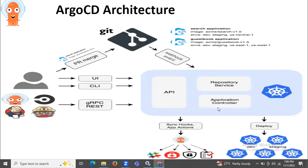The Application Controller is a Kubernetes controller which continuously monitors running applications and compares the current live state against the desired target state. It communicates with the repository server to get generated manifests, and communicates with the Kubernetes API to get the actual cluster state. It also deploys app manifests to the destination cluster, detects out-of-sync apps, takes corrective actions if needed, and invokes user-defined hooks for lifecycle events.